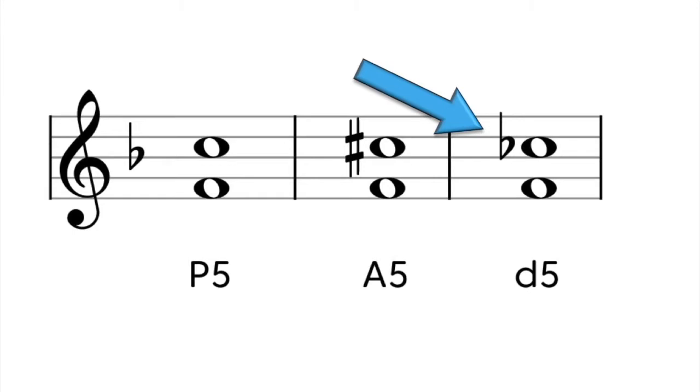To make a diminished fifth, you take a perfect fifth and then make the interval one half step smaller.